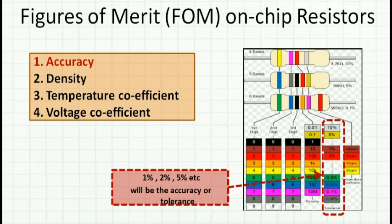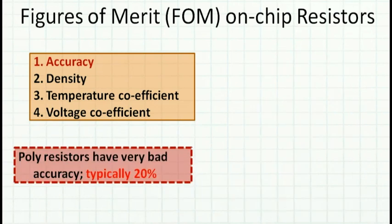The first figure of merit is accuracy. Off-chip through-hole resistors come with a color code that represents their tolerance — for example, 1%, 2%, 5%, or 10% accuracy. Poly is the material used for on-chip resistors. These poly resistors have very poor accuracy, typically around 20%; some processes offer 15% and some have even 25 to 30% variation.